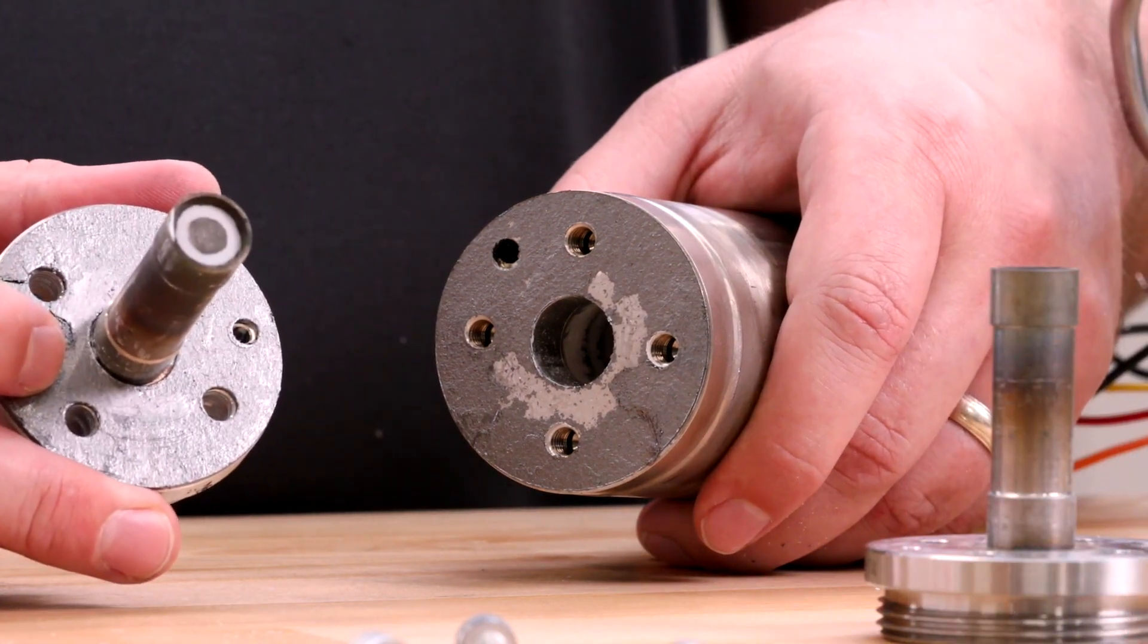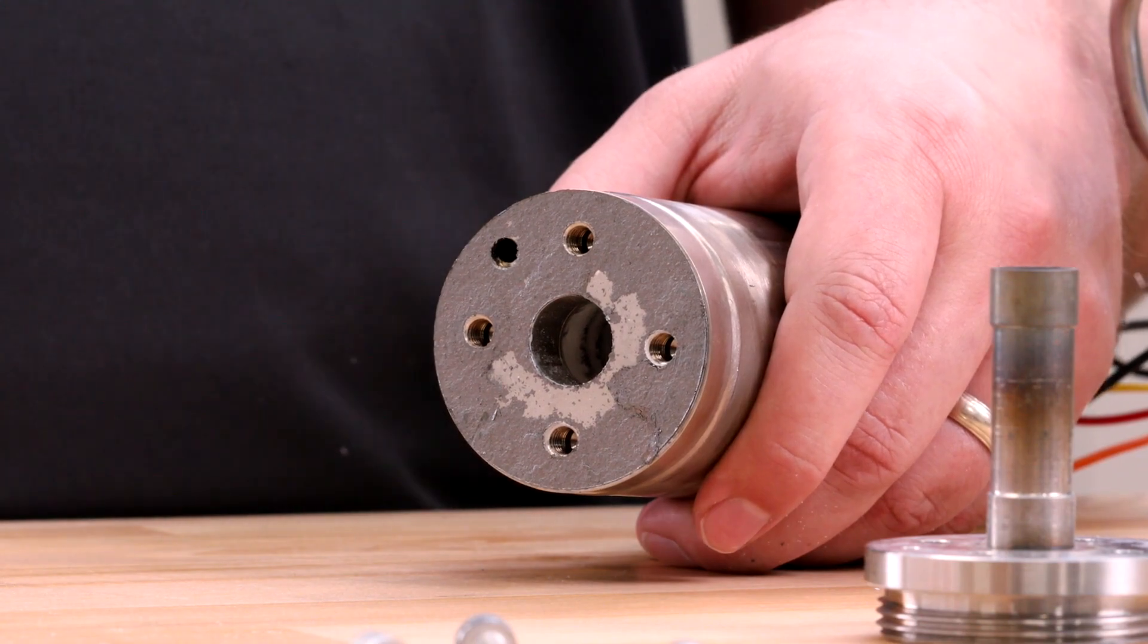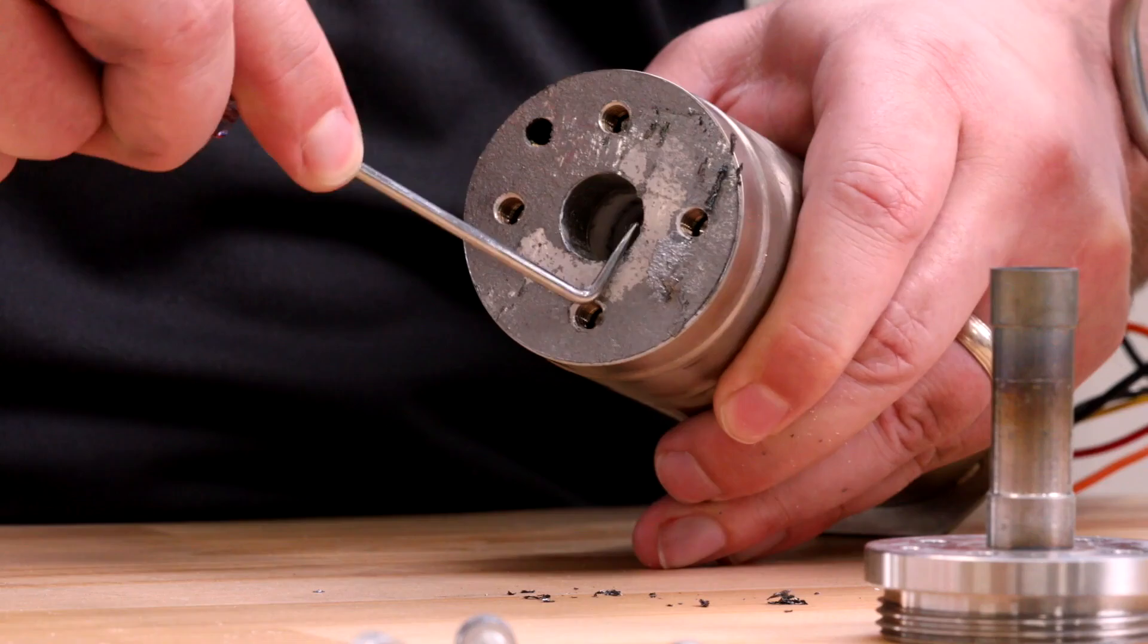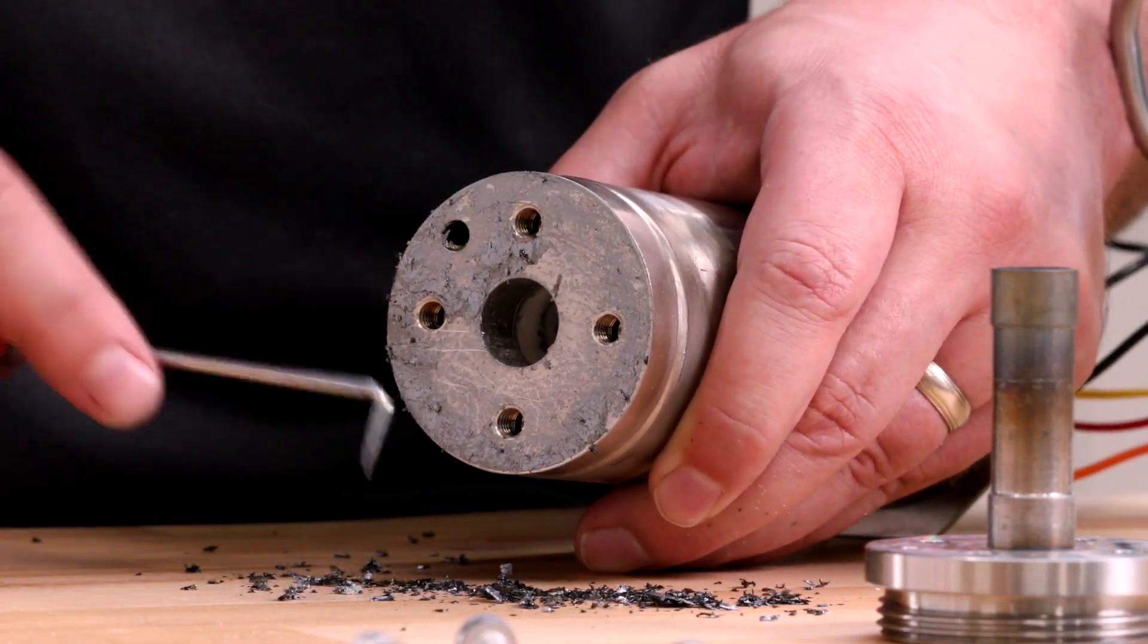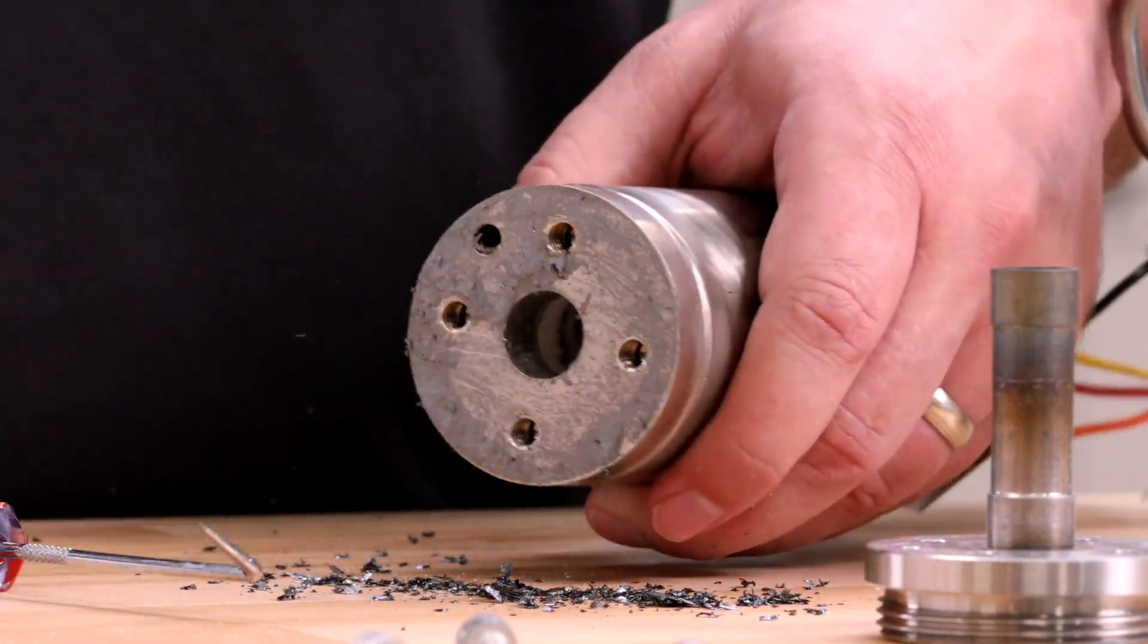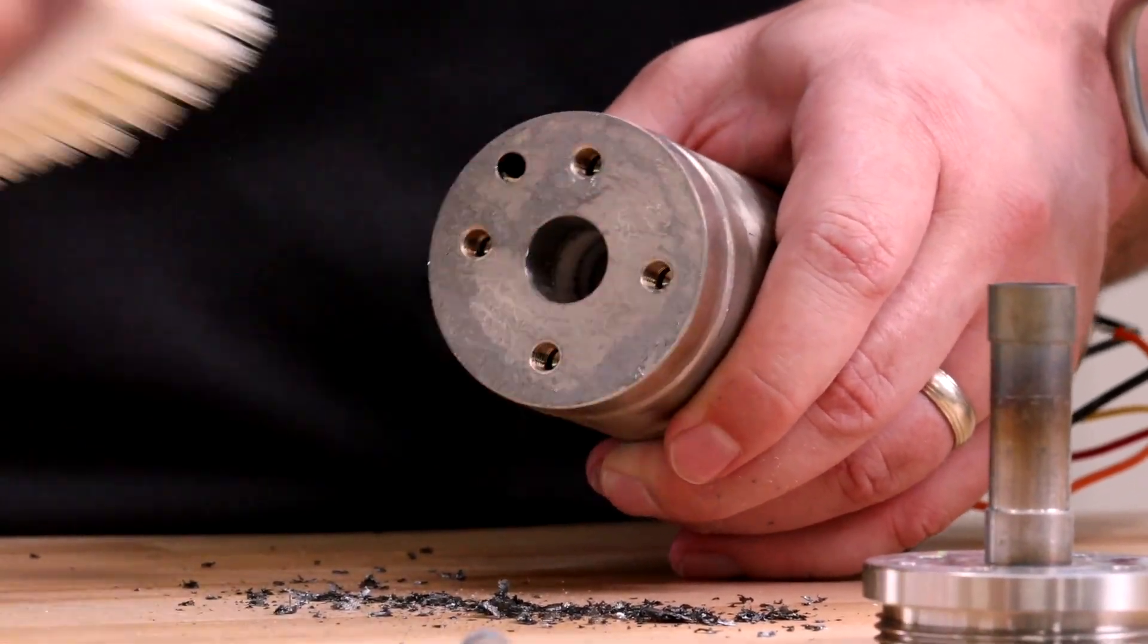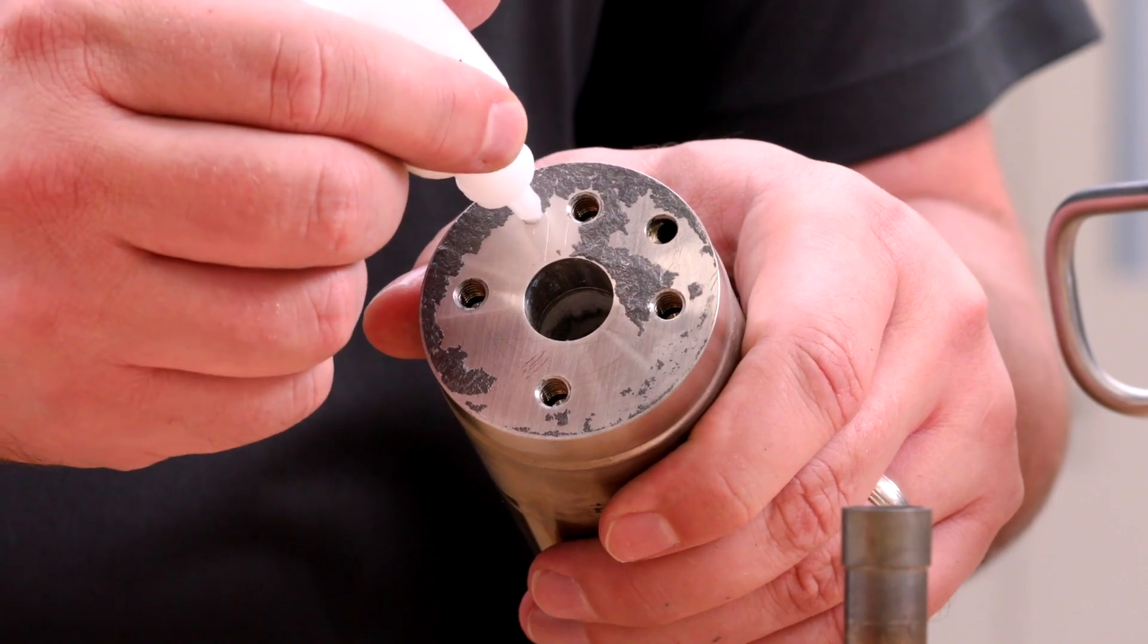Remove and discard the gasket. Clean the mating surface of the heater tube to ensure the surface is smooth and clean. Once clean, apply a small amount of anti-seize compound to the heater strut assembly and new O2 cell.